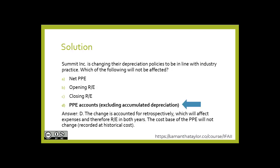The answer is D, PP&E accounts excluding accumulated depreciation. That's because if the change is accounted for retrospectively, this would affect the expenses and therefore affect retained earnings in both years. However, the cost of the PP&E — excluding accumulated depreciation — would not change, as the value is recorded at historical cost.